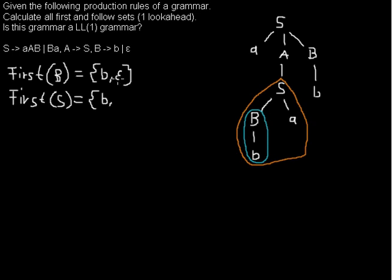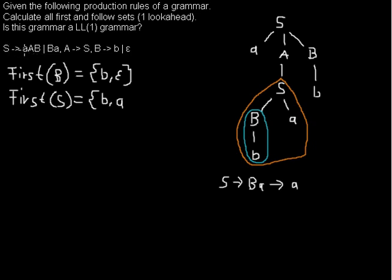Now B can be derived from epsilon, and if that happens — let me show you the derivation — if B derives to epsilon, then the first terminal under S will be an A, not epsilon. So epsilon is in the First set of B but not in the First set of S. But A is in the First set of S, because if B becomes the empty string, then A will be at the first place. Or another way to get A is from the first rule, where S goes to terminal a and whatever. So you have b and a in the First set of S.